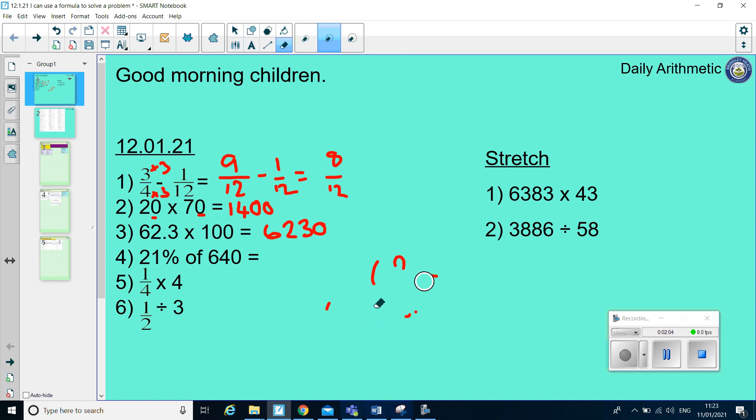Question 4, this is the question that I think you would have found most tricky yesterday. Hopefully you've remembered how to do it. So, the first step is to find what 1% of 640 is. To find 1%, I've got to divide by 100. So, I move my digits two places to the right. So, my 6 ends up in my ones column, my 4 ends up in my tenths column. So, 1% of 640 is 6.4, and I would write that down, make a note of that.